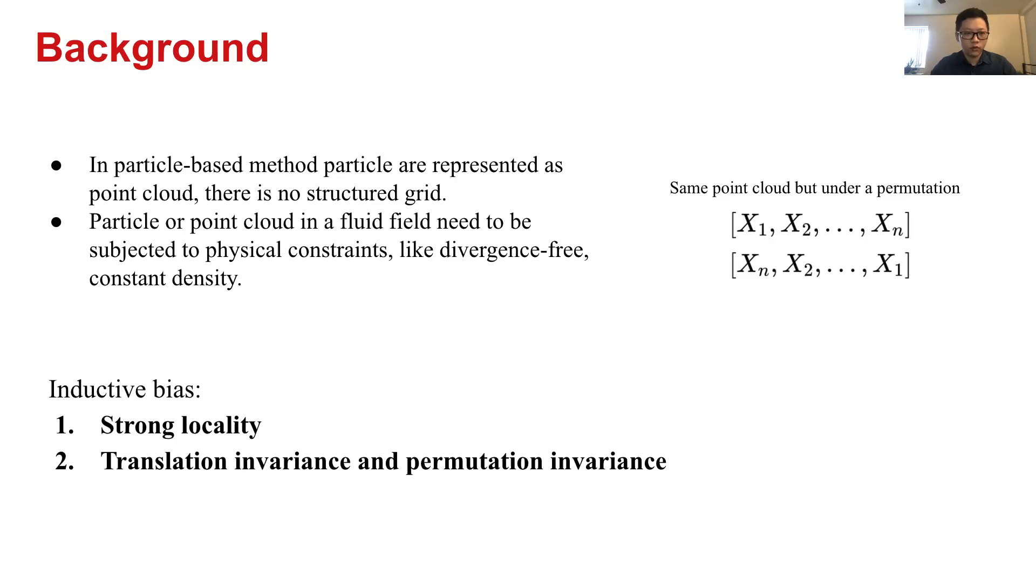In general, the model of particle-based methods imposes inductive bias for all where to be built deep learning models to capture. The first one is strong locality. In SPH and many of its variant methods, particles in the nearby area will have very close values if their distances are small.